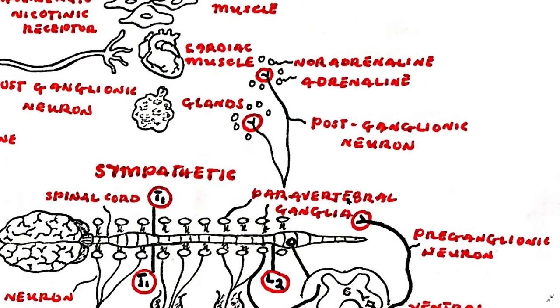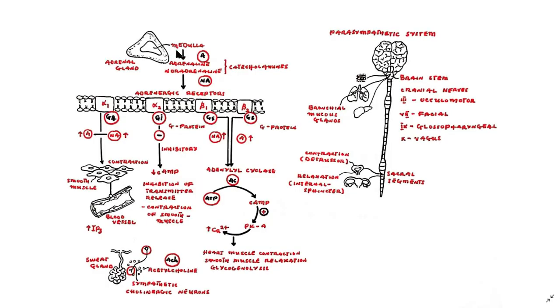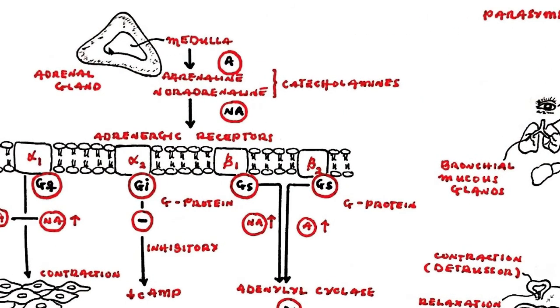Sympathetic postganglionic neurons terminate in the effector organs where they release noradrenaline, also known as norepinephrine. Noradrenaline and adrenaline, which are released by the adrenal medulla, are catecholamines. They activate adrenergic receptors which are linked via G-proteins to cellular effector mechanisms.